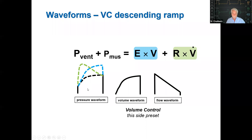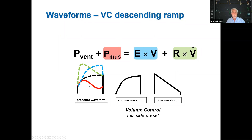If resistance increases, the high flow at the beginning of inspiration hitting a high resistance causes a high initial pressure, and as flow decays, the resistive pressure drops over time. Any increase in muscle pressure will cause a decrease — scooping out — of the airway pressure, because the right-hand side of the equation is constant. This is true of all forms of volume control ventilation.